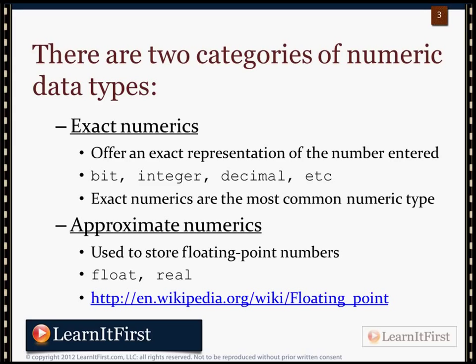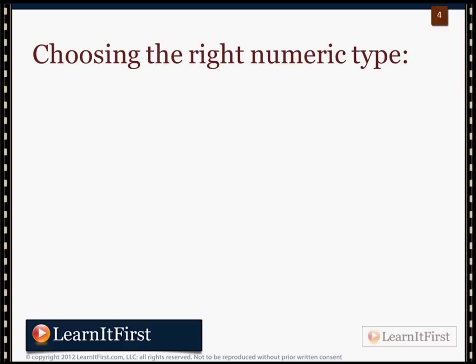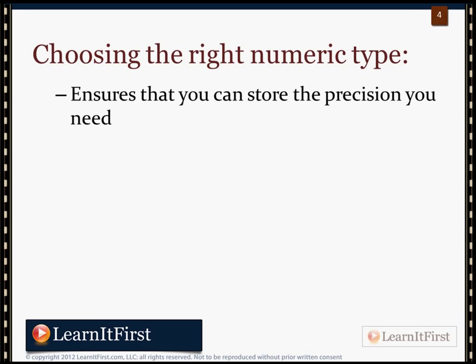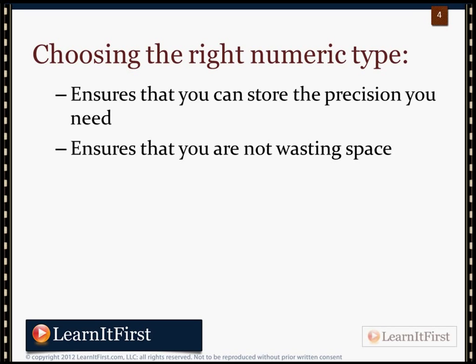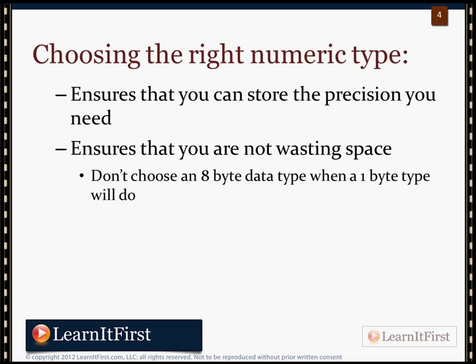Not everybody's gone to computer science class, or maybe it's been a few years. It's important that you have a solid knowledge of the different data types. This ensures you'll be able to store the correct number of decimal places, the correct number of digits, and you also want to make sure you're not wasting space. You wouldn't want to choose an 8-bit type for a 100 million row table when a 1-byte type would do — that would result in a lot of extra wasted space. This is somewhat of a performance tuning, optimization, and just good practice decision.